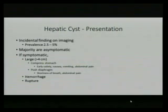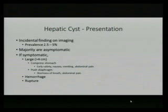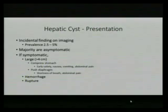Sometimes if cysts are on the right side and large enough, depending on location — particularly if posterior on the liver — they push the diaphragm, resulting in shortness of breath and abdominal pain. Very rarely, they can present with rupture and hemorrhage, but the chance of that is virtually zero percent.